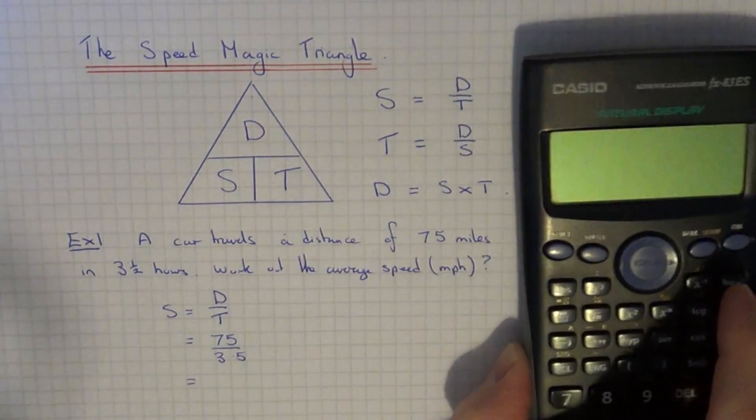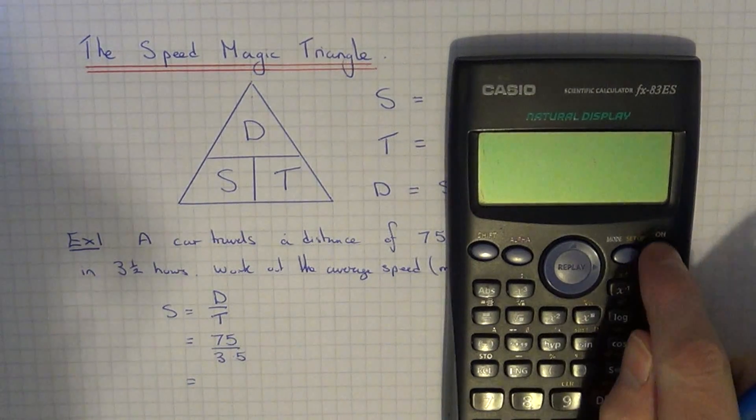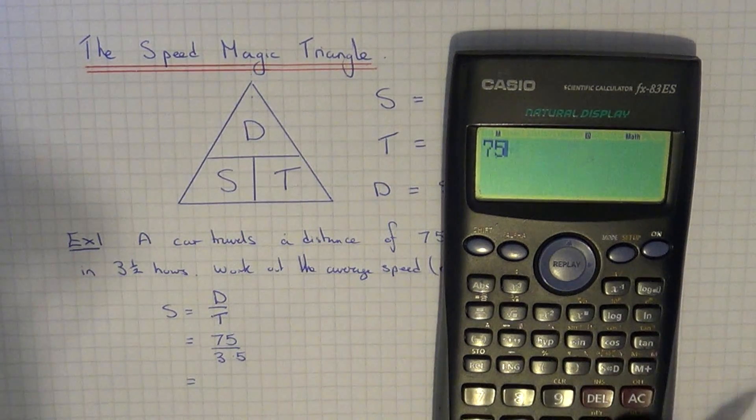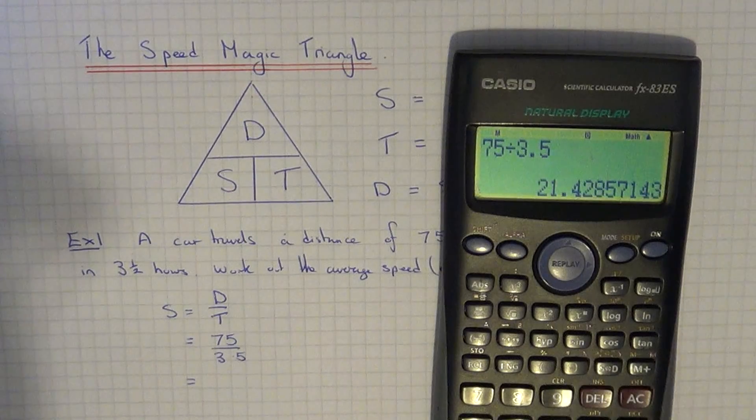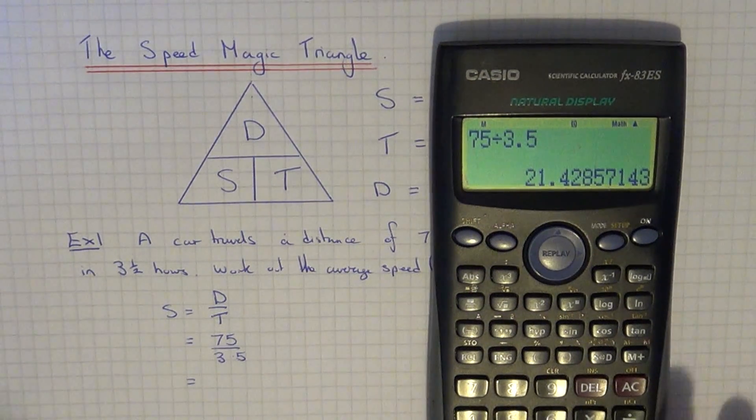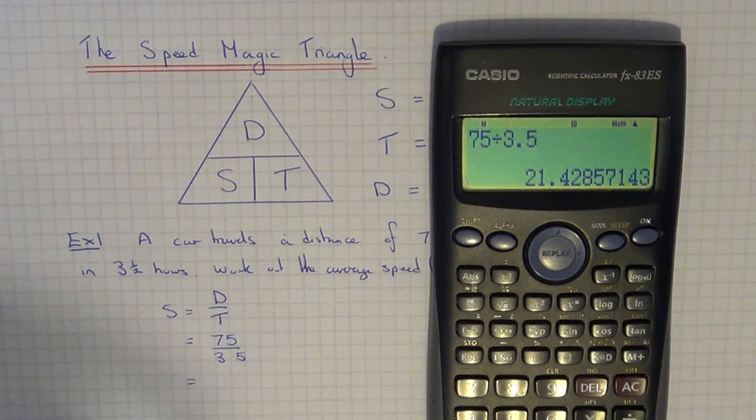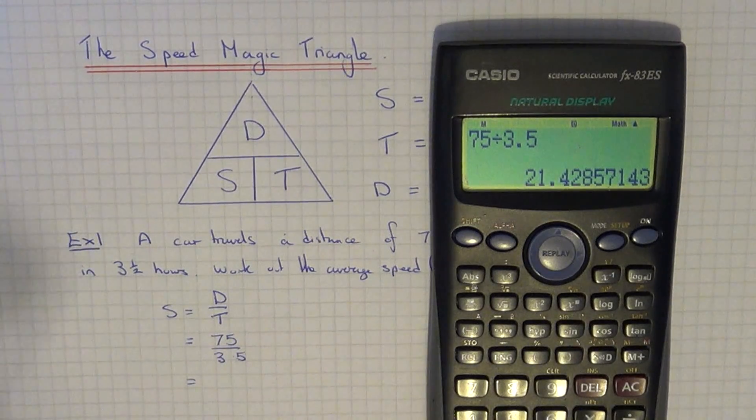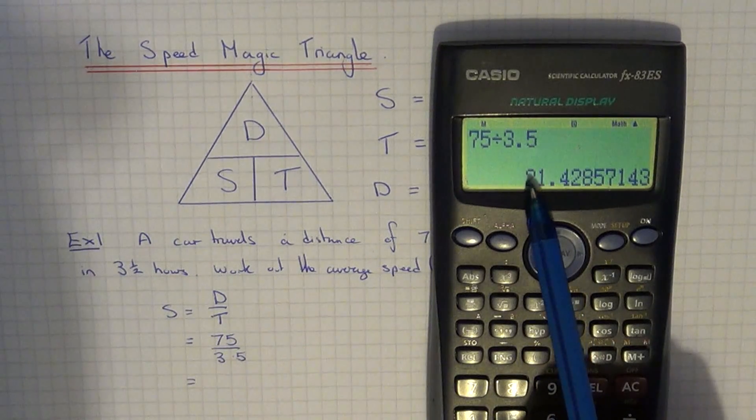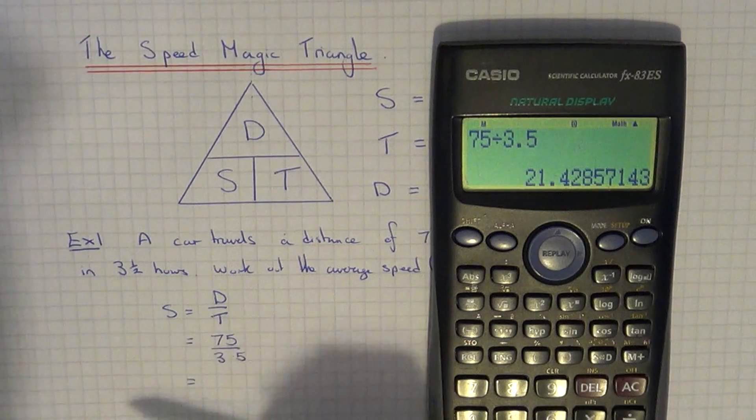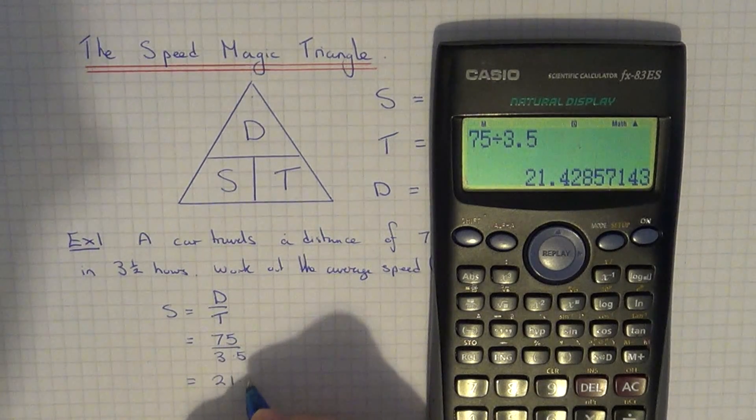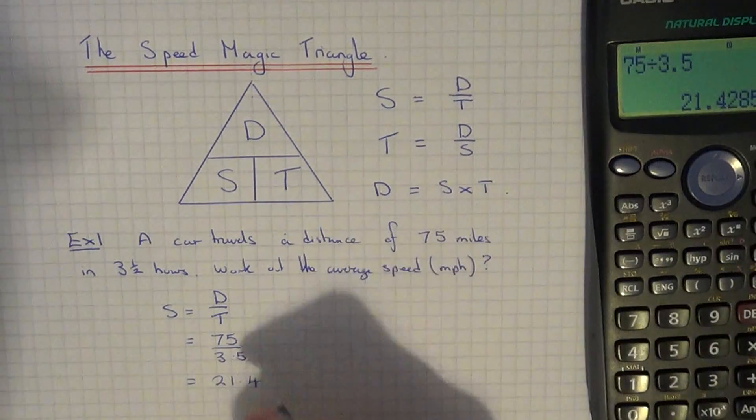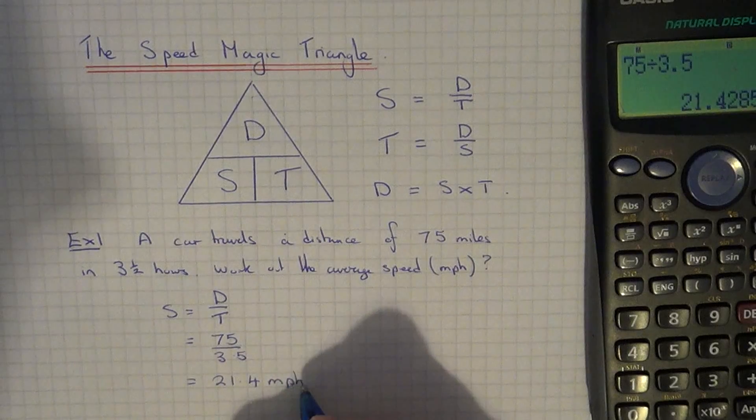So we need to work out 75 divided by 3.5. Use your calculator for this one. 75 divided by 3.5 comes out as 21.42857143. If we round this off to three significant figures, that's three numbers from the start: 21.4. So that is your speed of the car in miles per hour.